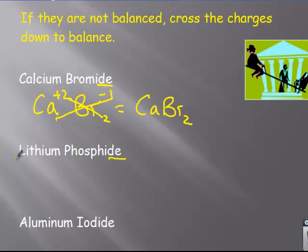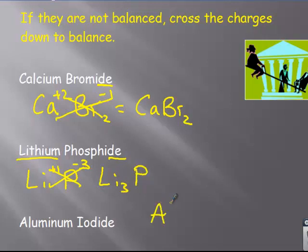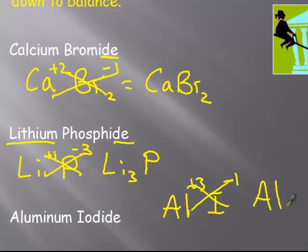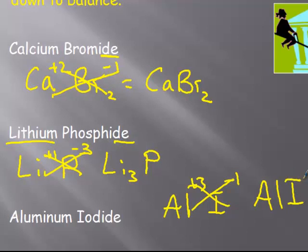Lithium phosphide, again, ionic. It's a metal. IDE ending tells us it's binary. Li with a plus one. Phosphorus is what we'd have there with a minus three. So plus one minus three, we cross them down, and you get Li3P. Aluminum iodide, Al plus three. Iodide minus one. Cross them. Al gets the one, but we don't write ones. I gets a three. So aluminum iodide, AlI3.